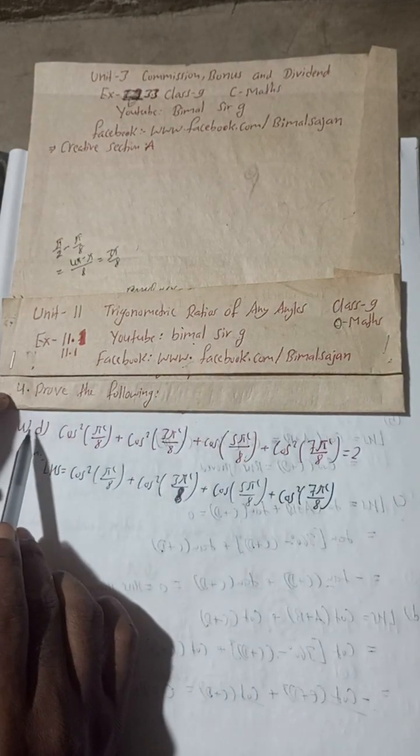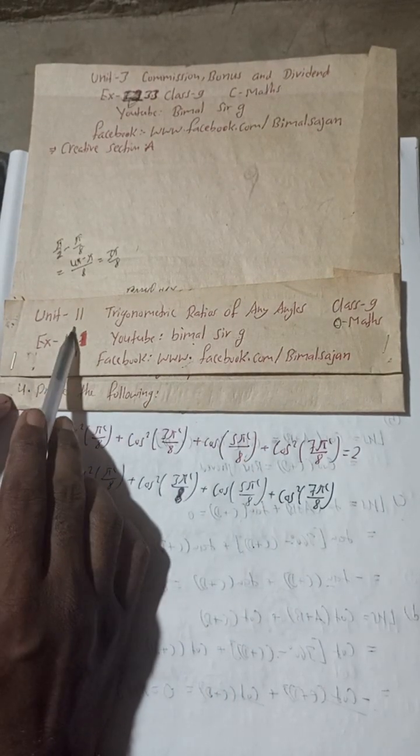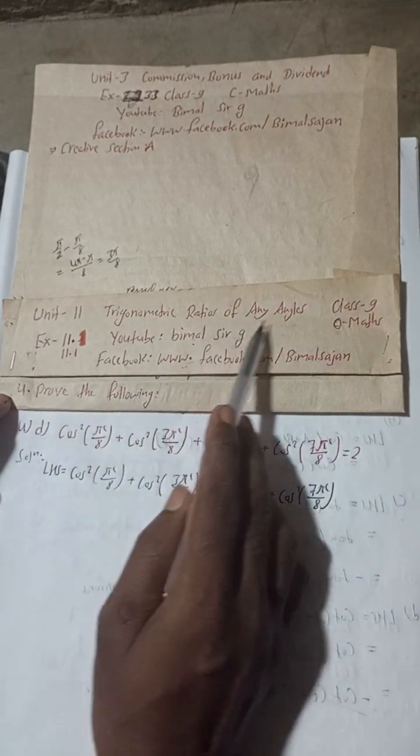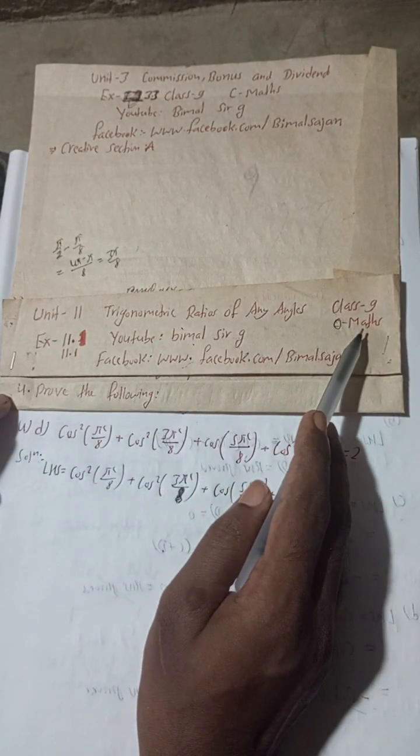This is question number 4D, Exercise 11.1, Unit 11, Trigonometric Ratios of Any Angles, Class 9 Optional Maths.